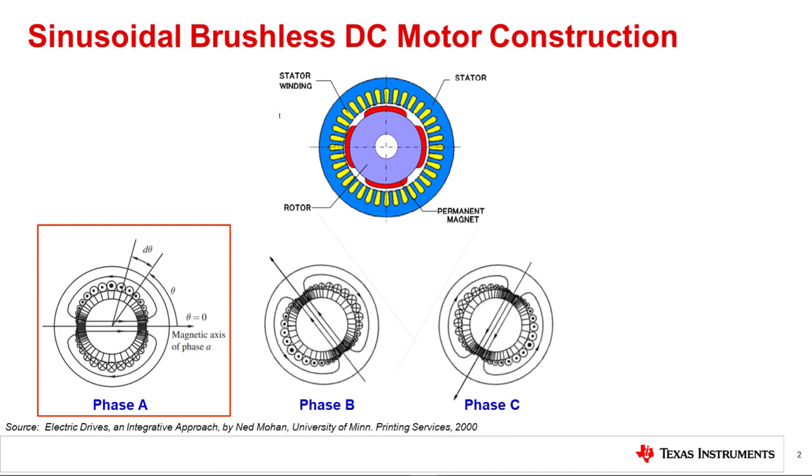When we spin the rotor by hand, the rotor magnetic fields cut the stator windings and generate a sinusoidal back EMF voltage waveform. This back EMF waveform can be measured by disconnecting the motor driver from the motor and using a scope connecting from one phase to another.